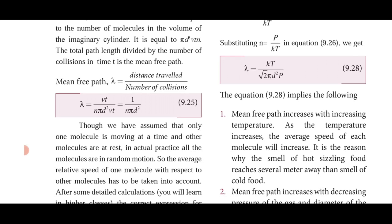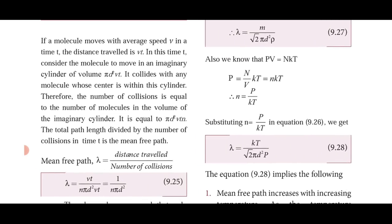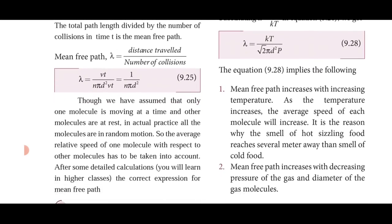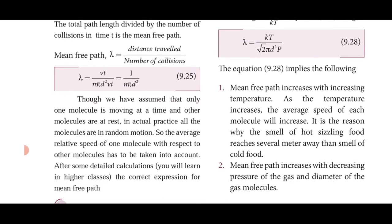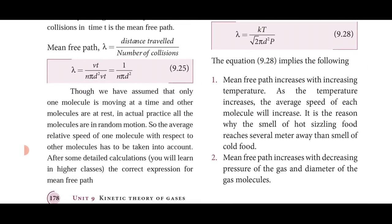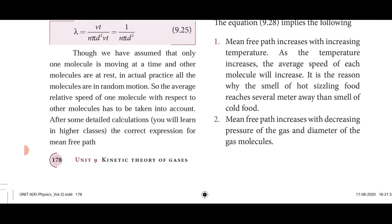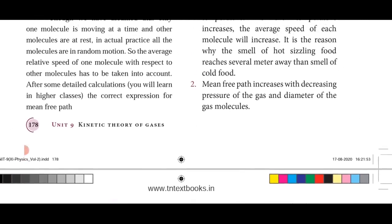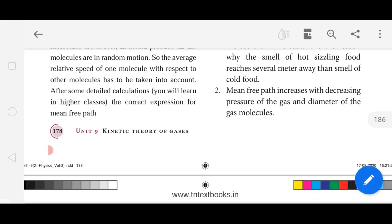Substituting n = p/kT gives λ = kT/(√2 · π · d² · p). This implies mean free path increases with increasing temperature — as temperature increases, the average speed of each molecule increases. That is why the smell of hot sizzling food reaches several meters away compared to cold food. Mean free path also increases with decreasing pressure and decreasing molecular diameter.